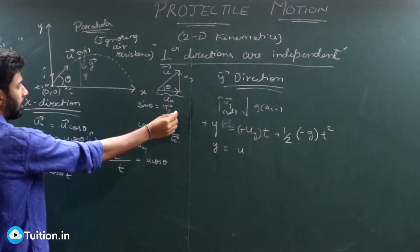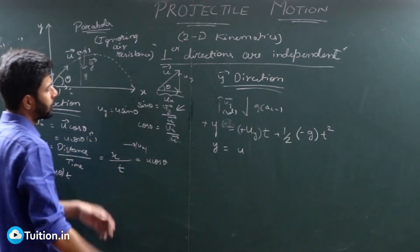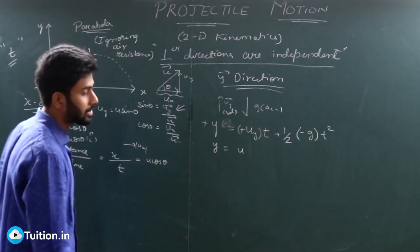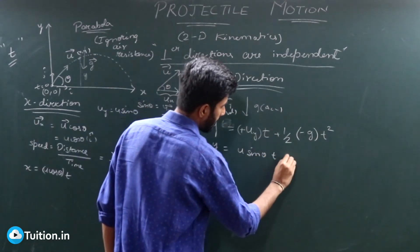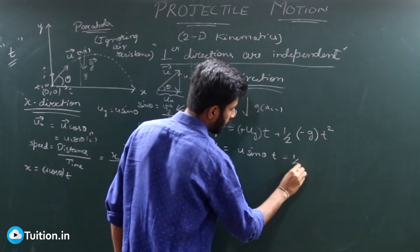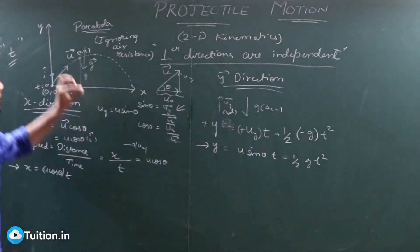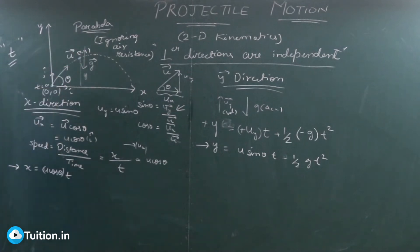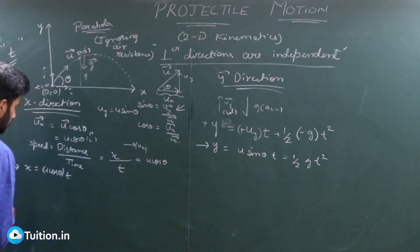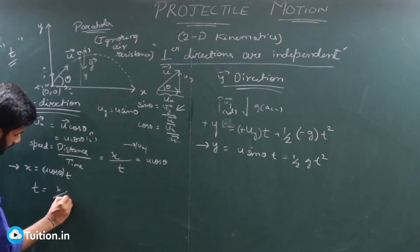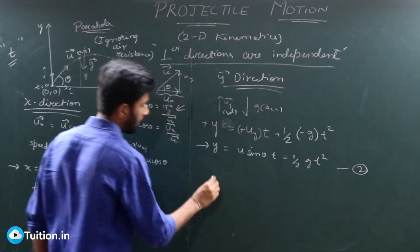Since uy = u·sinθ, the y-equation becomes y = u·sinθ · t − ½g·t². So now you know x with respect to time: x = u·cosθ · t, and y with respect to time: y = u·sinθ · t − ½g·t². If you eliminate time from these two equations, you get the equation of y with respect to x — the trajectory equation.